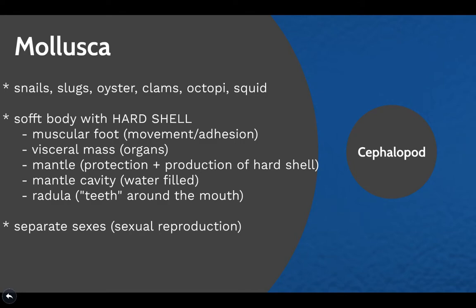The next clade is Mollusca, which includes snails, slugs, oysters, clams, octopi, and squid. These organisms have a soft body, often with a hard shell, a muscular foot used for movement or adhesion, a visceral mass of organs, a mantle used for protection or shell production, a mantle cavity sometimes filled with water, and radula — tooth-like structures around the mouth that help with hunting. There are separate sexes, enabling sexual reproduction.